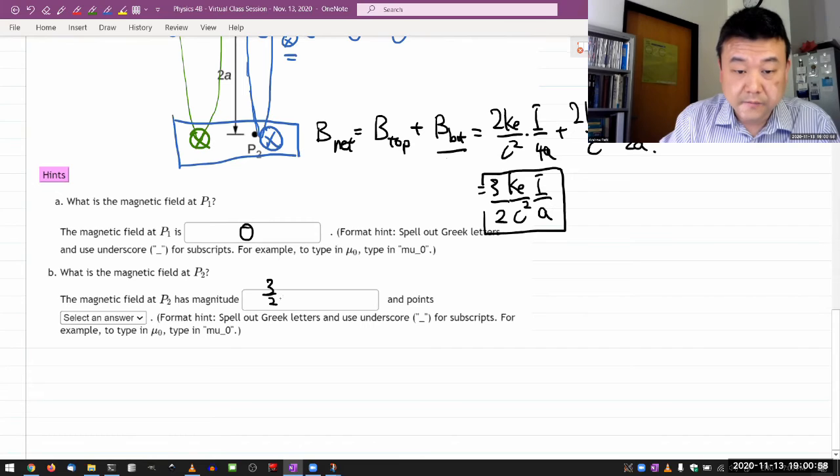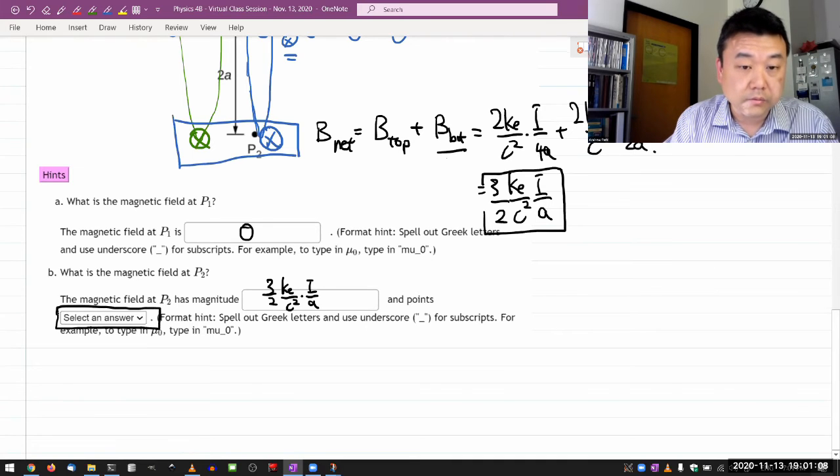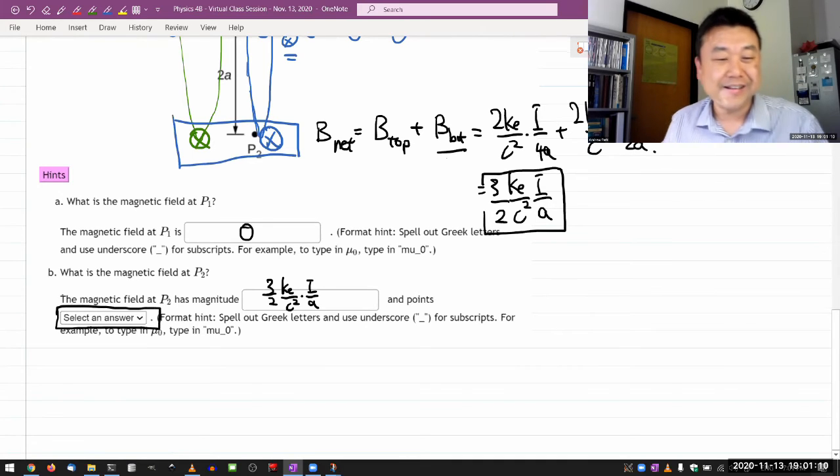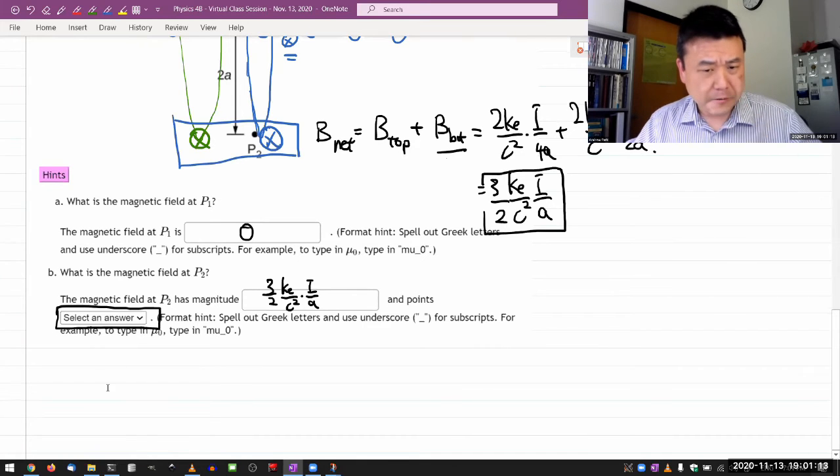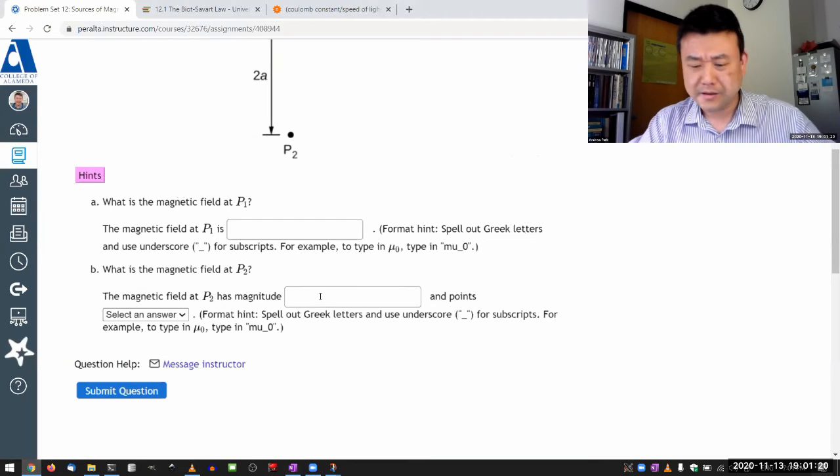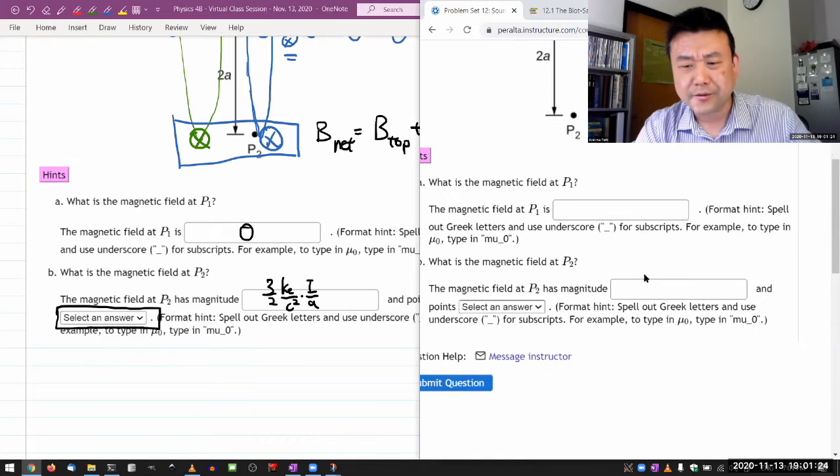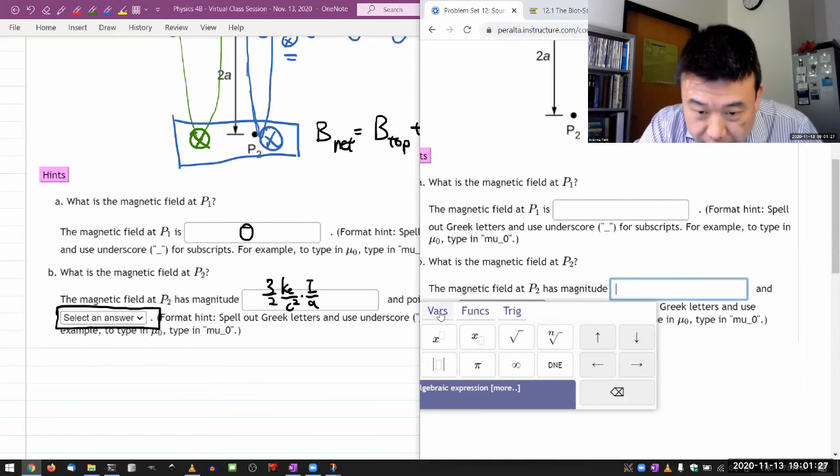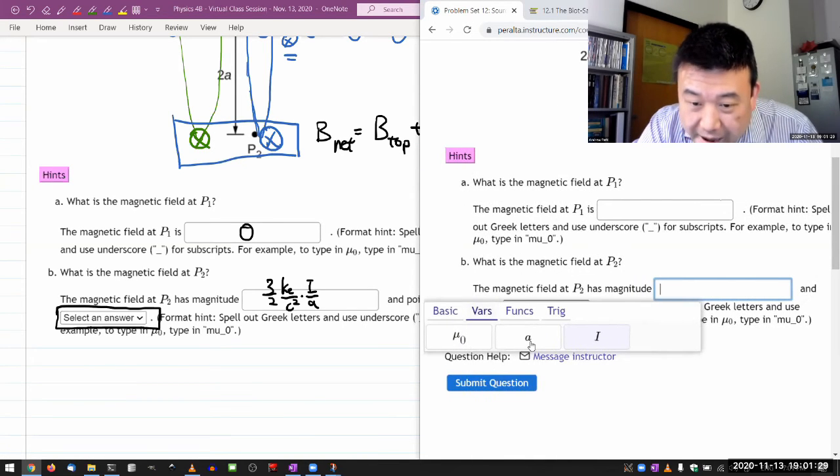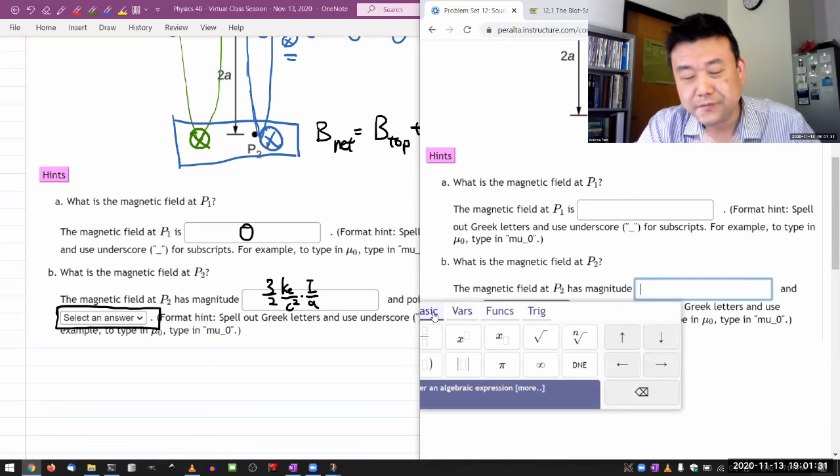And this is one of the rare questions that ask for analytical expression. So this should be the answer: three halves k_e over c squared times i over a. And the answer here should be into the page. So let me plug in those answers and see. I'm actually a little bit curious if I programmed in these coefficients. There's a good chance I didn't do that. So we'll test it and see. If it doesn't work, then I know how to change the code. Yeah, so I need to fix these questions.